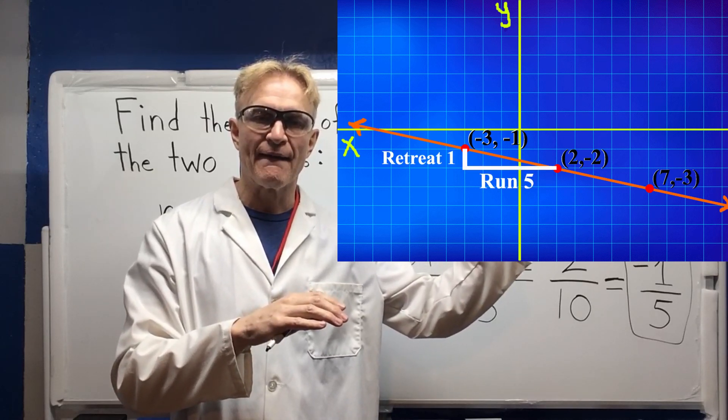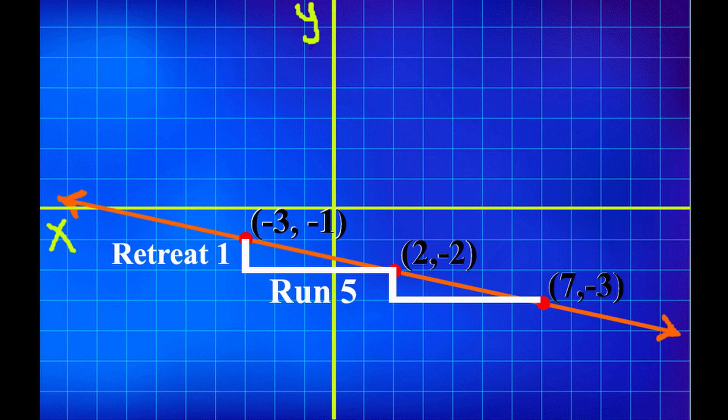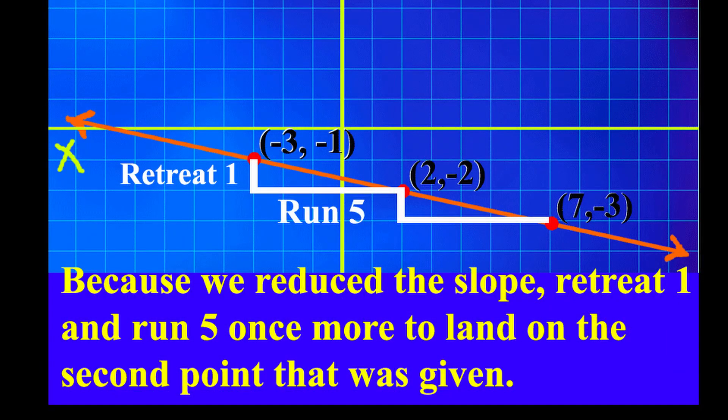Run to the right 5. To find the point with the subscripts of 2, repeat the slope movements. Because we reduced the slope, retreat 1 and run 5 once more to land on the second point that was given.